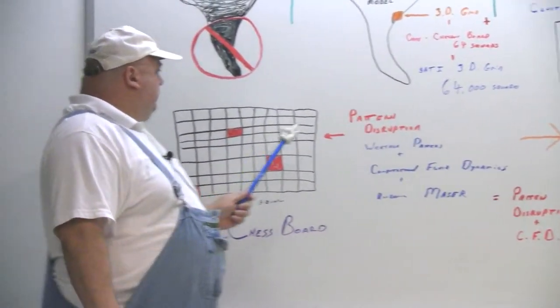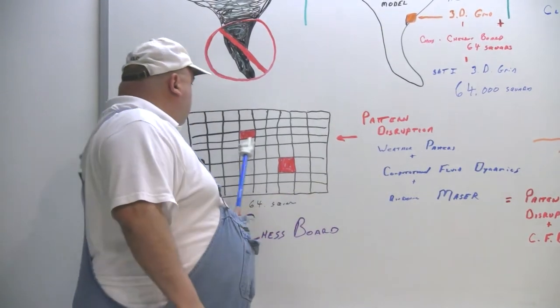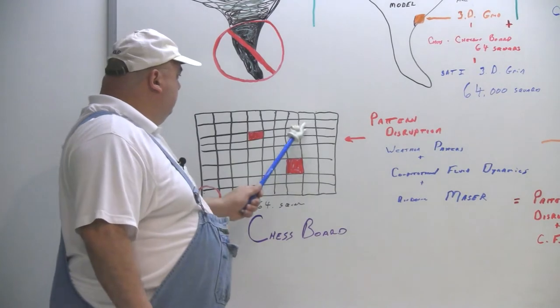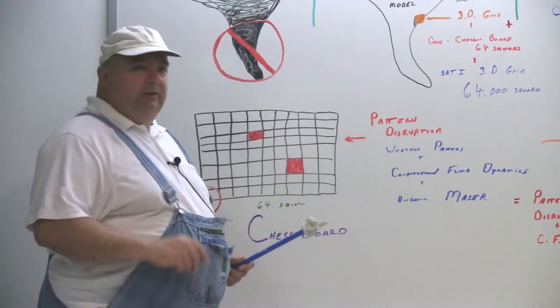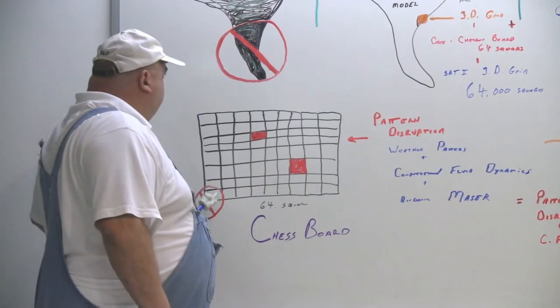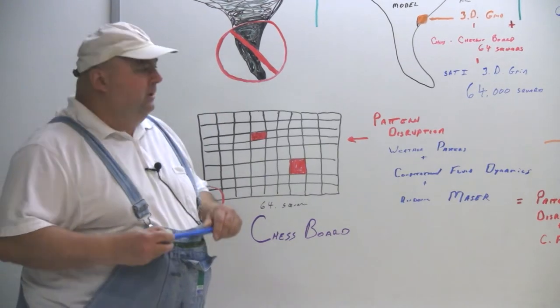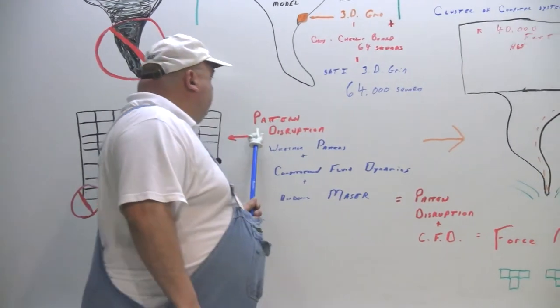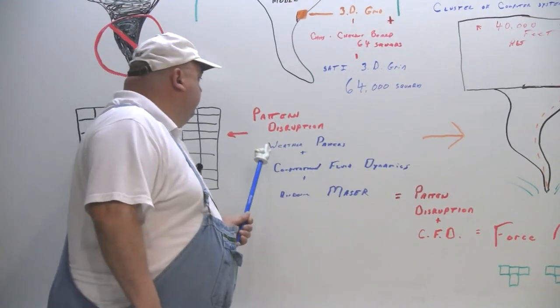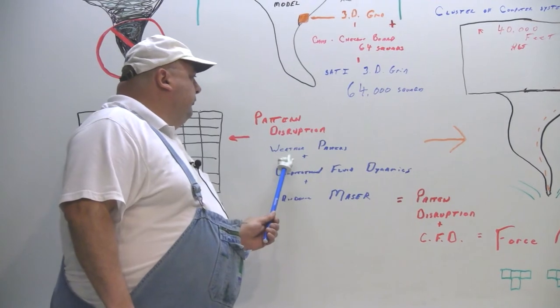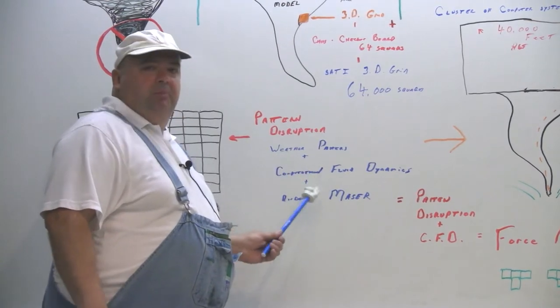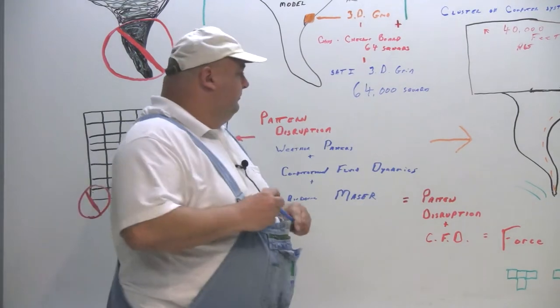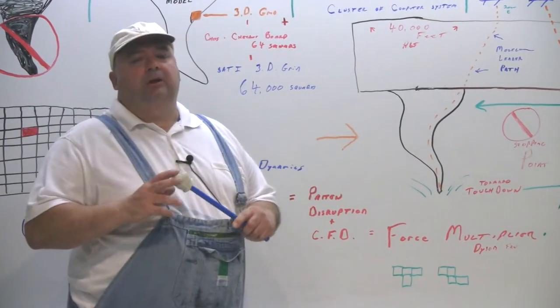But anyway, here, this is 64 squared chessboard. If I manipulate different patterns at different times, I can stop the final outcome, which is the funnel cloud touching the ground. The pattern disruption is a sum of the weather patterns, computational fluid dynamics, and the airborne maser.